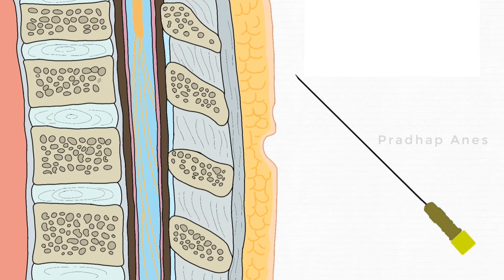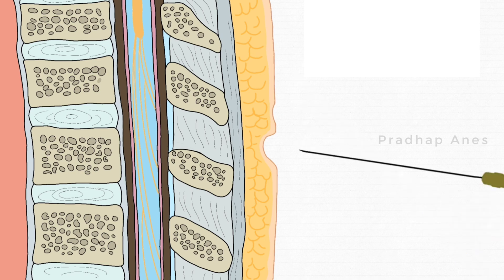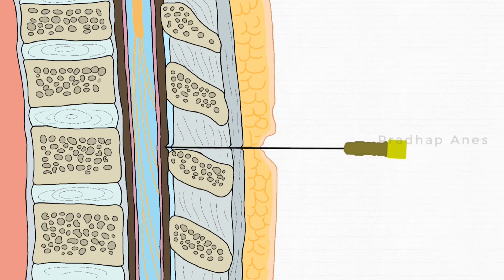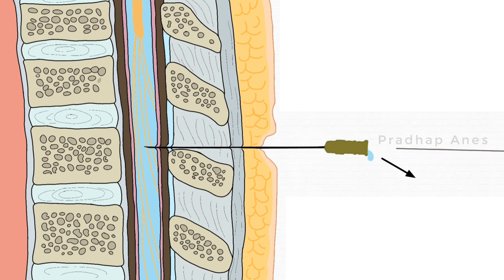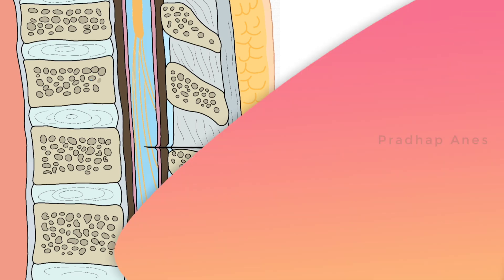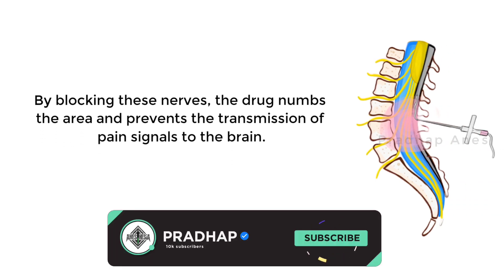In spinal anesthesia, a fine needle is inserted to reach the subarachnoid space of the dural sac, where spinal fluid called CSF is present, then drugs are administered to numb the nerves. By blocking these nerves, the drug numbs the area and prevents the transmission of pain signals to the brain.